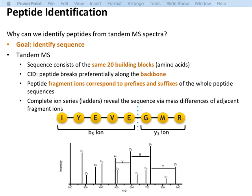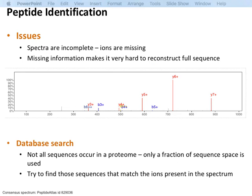The problem is that fragmentation is often incomplete — rather than having fragments for each peptide bond, you tend to have only a subset. The idea of database search is that even if we don't have the full sequence, we have partial information on which amino acids are present. We can look in a database containing all protein sequences and try to match these peaks against the sequence. Rather than searching a sequence against a sequence database, we now search a spectrum against the sequence database.